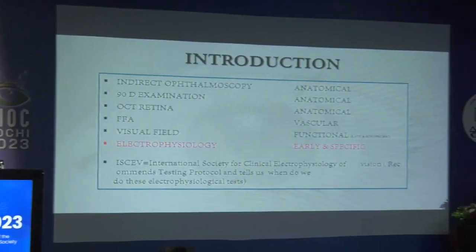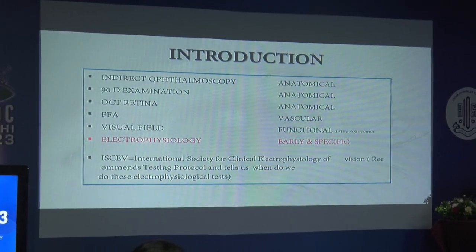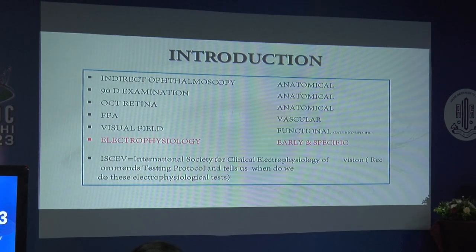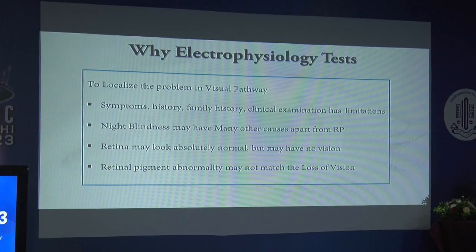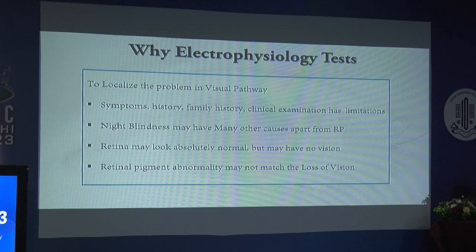Good morning everyone. I thank the AIOS for giving us this opportunity to have this instruction course. I'll be introducing electrophysiology so that subsequent speakers can talk about more specific things. We have different investigative procedures — direct ophthalmoscopy, 90D, OCT, FFA, visual fields — but electrophysiology gives us early and specific information. Why do we need electrophysiology tests? It is to localize the problem in the visual pathway. Symptoms, history, family history, and clinical examinations have their limitations.